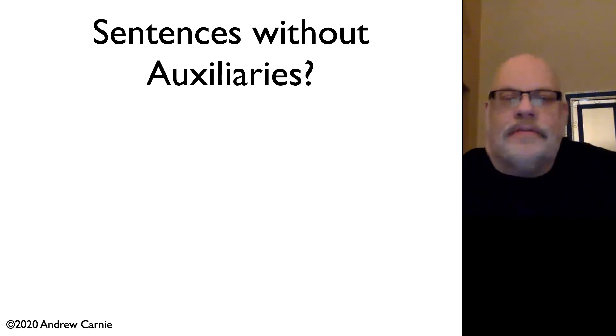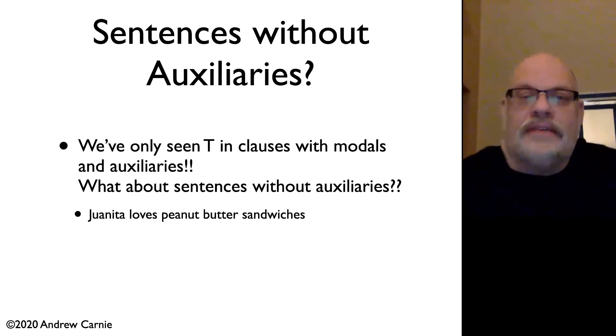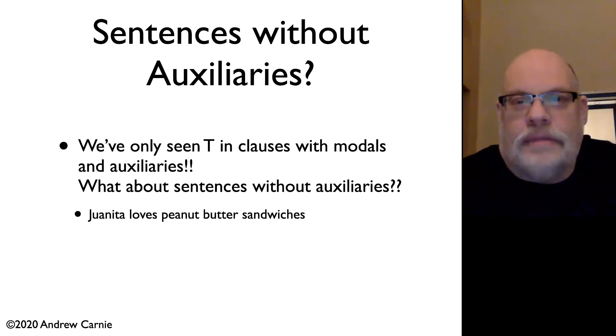So now what happens with TPs in sentences where we don't have an auxiliary like will? What's going on in that kind of situation? If we've got X-bar theory, the TP has to have a T in it because the tense and the T-bar and the TP are the obligatory parts as defined by X-bar theory.